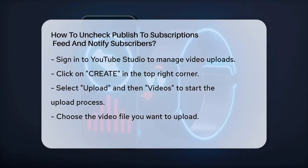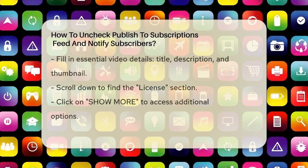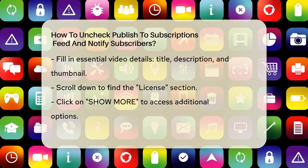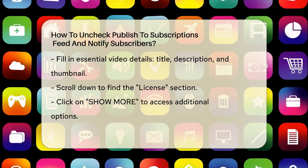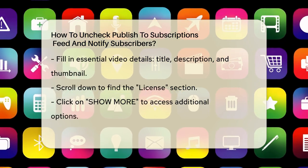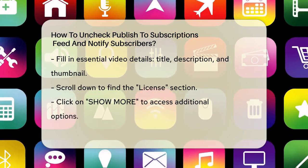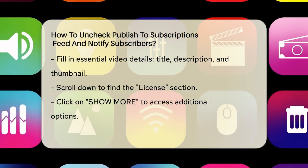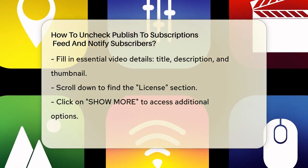To start, sign in to your YouTube Studio. In the top right-hand corner, click on Create and then select Upload Videos. Choose the file you want to upload and fill in the video details such as the title, description, and thumbnail.